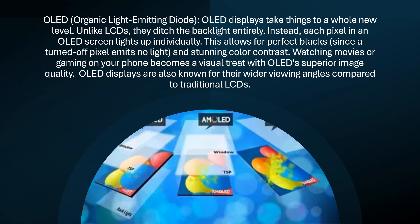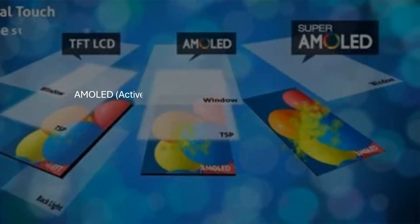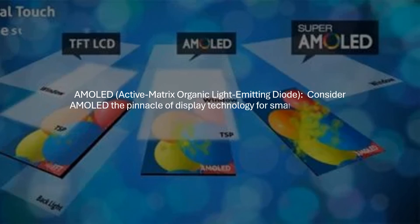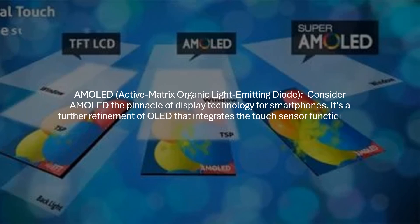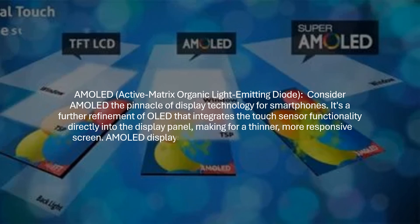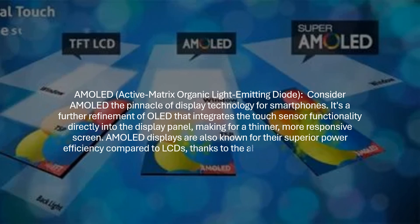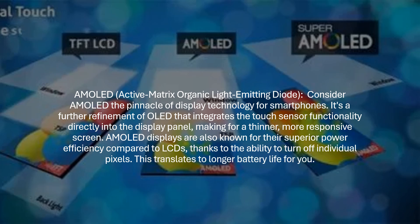OLED displays are also known for their wider viewing angles compared to traditional LCDs. AMOLED — Active Matrix Organic Light Emitting Diode — is considered the pinnacle of display technology for smartphones. It's a further refinement of OLED that integrates the touch sensor functionality directly into the display panel, making for a thinner, more responsive screen. AMOLED displays are also known for their superior power efficiency compared to LCDs, thanks to the ability to turn off individual pixels, translating to longer battery life.